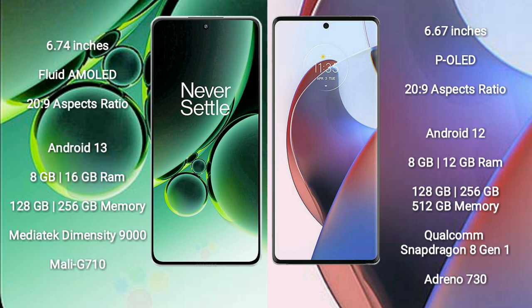OnePlus Nord 3 runs on the Android 13 operating system, while Motorola Edge 30 Ultra runs on Android 12. OnePlus Nord 3 comes with 8GB or 16GB RAM, 128GB or 256GB internal storage, a MediaTek Dimensity 9000 processor, and GPU Mali-G710.